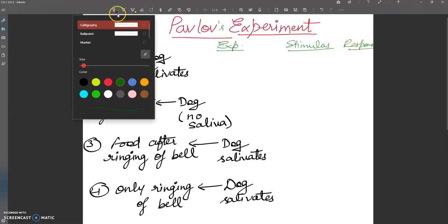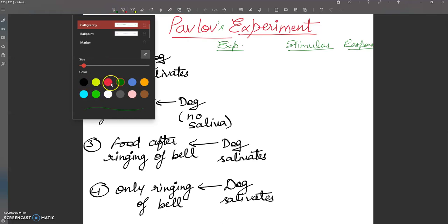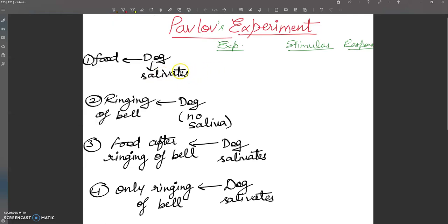Let's start. I am using different colors here. In the first experiment, a hungry dog is presented with food. There's a dog who is hungry, and food is brought in front of it.